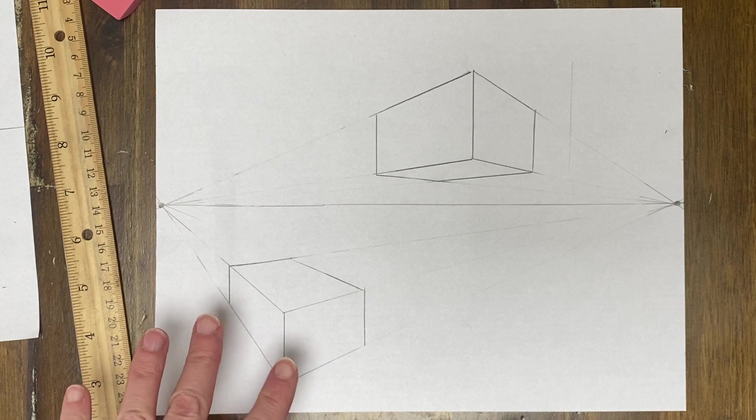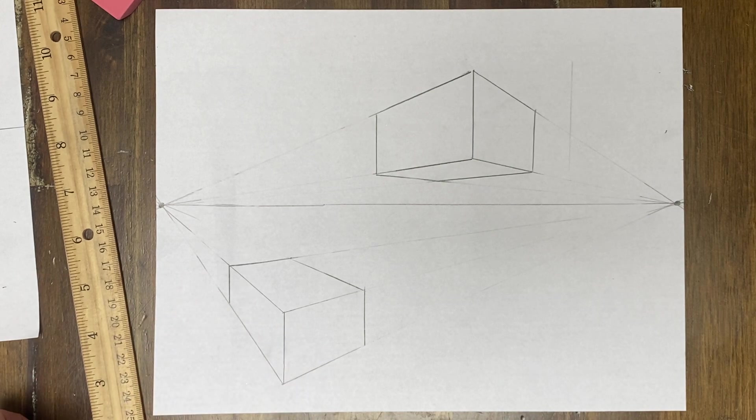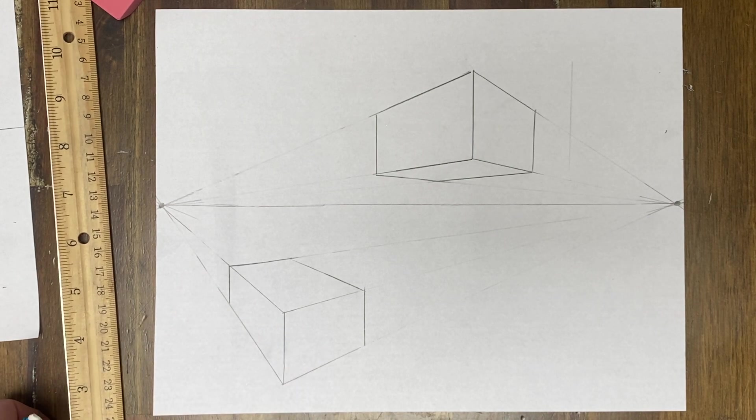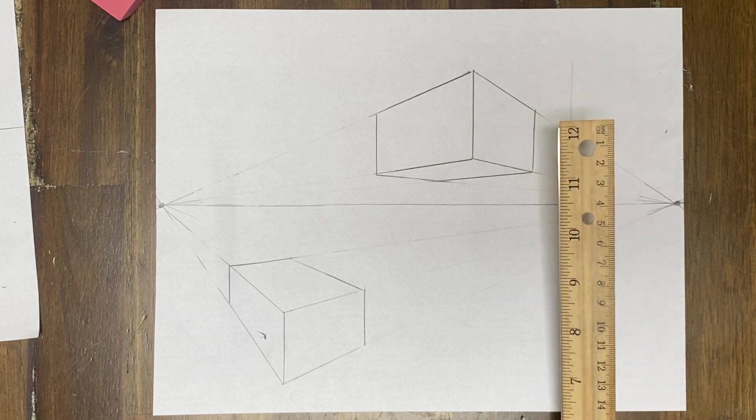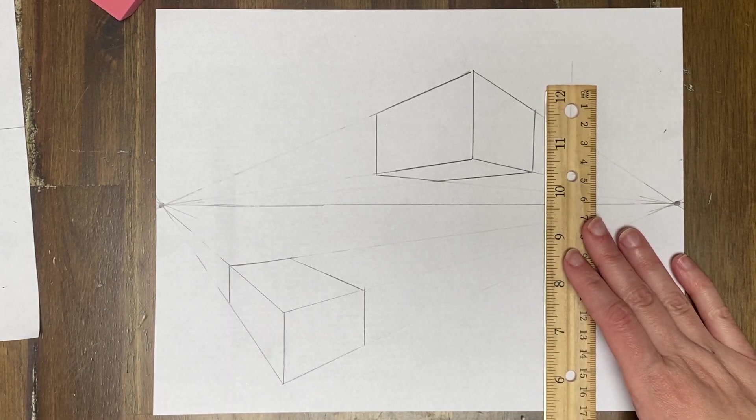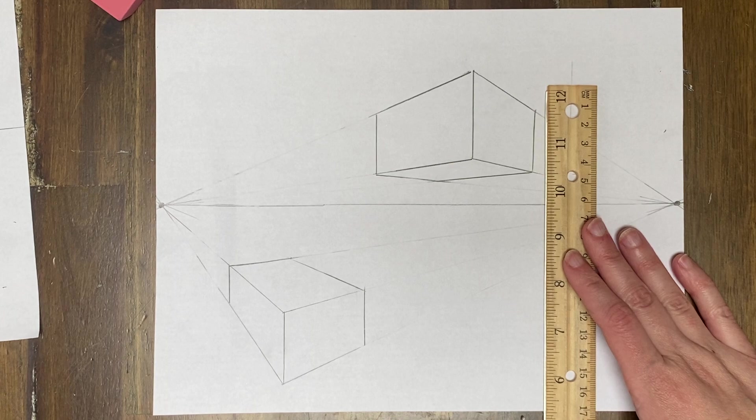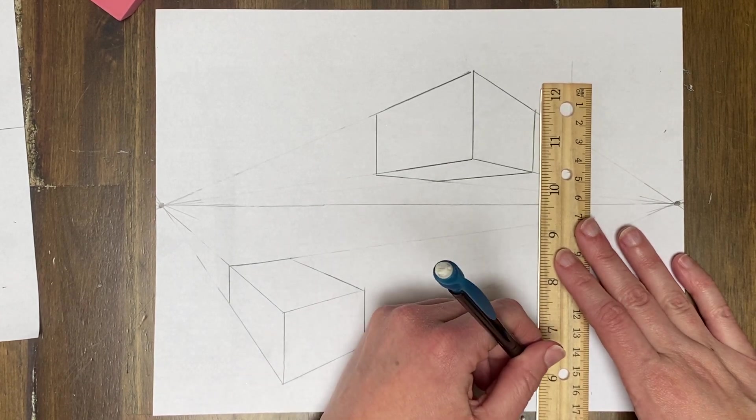So I have a couple of cubes already made but we'll review the steps to make a cube together. First things first, remember in two-point perspective we see the edge first and we always draw what we see first. So we're gonna draw the corner or the edge.